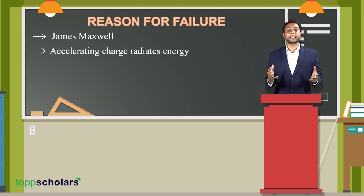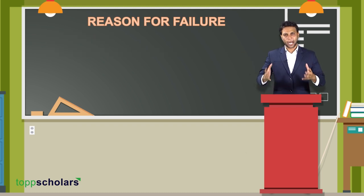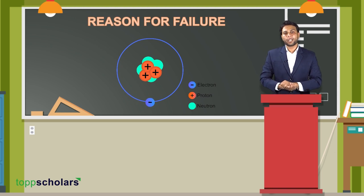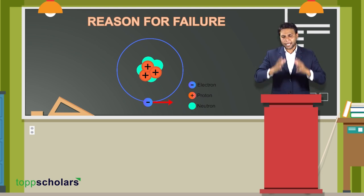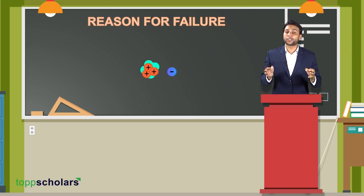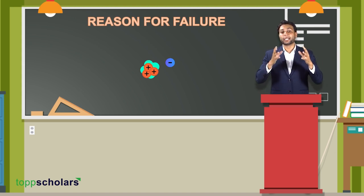However, Rutherford's theory failed to stand the test of time. This was due to a theory by James Clerk Maxwell. Maxwell gave a theory that accelerating charges radiate energy. Consider an atom with a nucleus at the center and electrons revolving around it. If the velocity of the electron is constant, at every point it is changing its direction. If direction changes, then velocity also changes, which means acceleration.